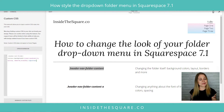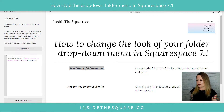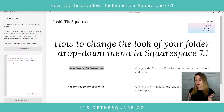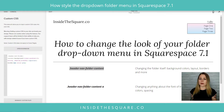Let's go ahead and give it a border to help it stand out a little bit more. I'll add a semicolon and say 'border: 2px solid gray'. There we go — now we have a little gray border going around it to help it stand out a little bit more.